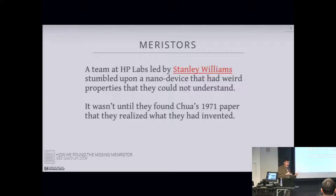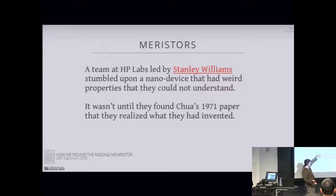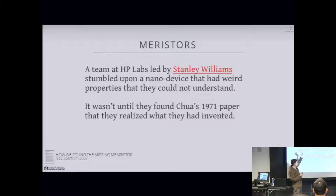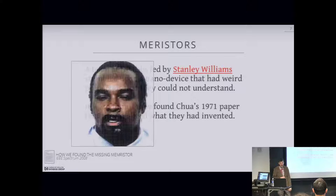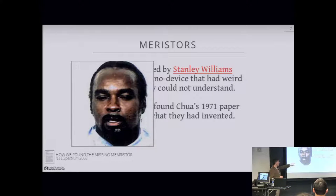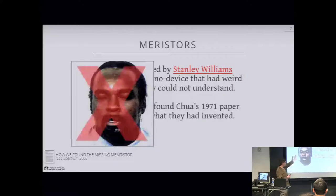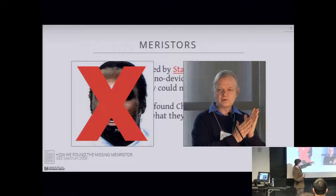They had a big announcement in 2008 saying they found the fourth circuit element and could actually manufacture it. Just to be clear — there's a link to the Stanley Williams HP page, but make sure you get the right one, because there are two Stanley Williams. Back when we started this project, I had Joy try to reach out to this guy and talk to him. Joy ended up contacting the other Stanley Williams, who is a death row inmate in L.A. — actually one of the founders of the West Side Crips. So when you Google Stanley Williams, make sure you get the right one.